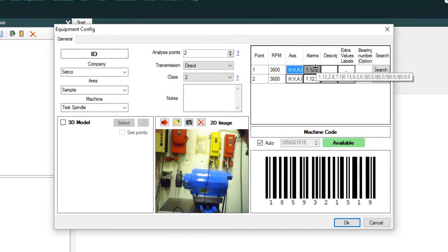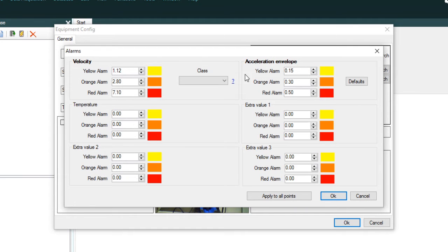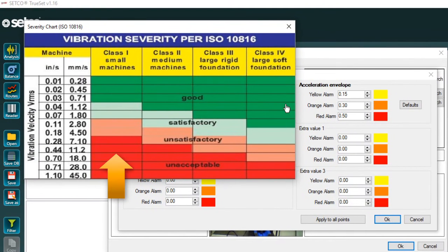The reference axes is used for 3D ODS simulation. For this example, the alarms are set to Class 2, which sets the parameters for the analysis of the equipment. Class 1 would be small items like gyroscopes. Class 3 is larger items like pumps or gearboxes. Setco uses Class 2 for doing analysis on precision spindles.